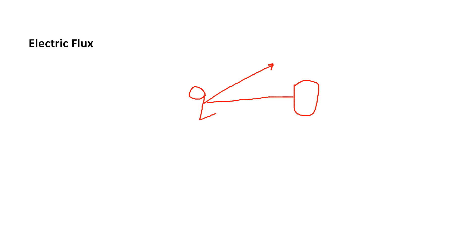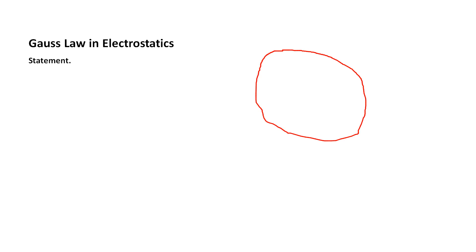So what is the statement of Gauss's law in electrostatics? Electric flux is used in Gauss's law in electrostatics, and Gauss's law is basically one of Maxwell's equations. To understand the statement of Gauss's law, let us draw a diagram. Suppose we have a hypothetical surface and a charge is placed inside the surface. Due to this charge, electric flux is flowing out through a very small area element of the surface.